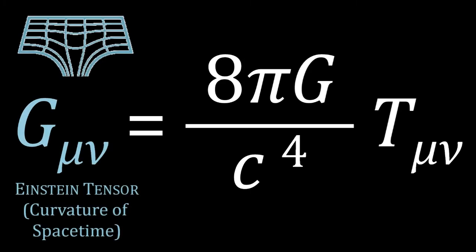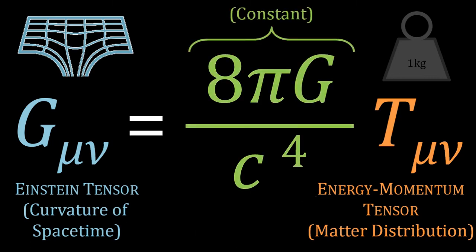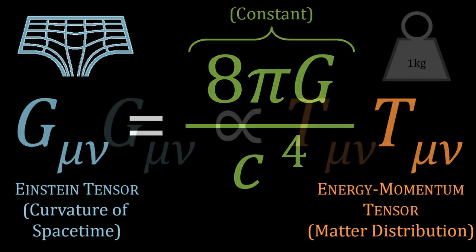The G mu nu represents the curvature of spacetime, and the T mu nu represents the distribution of matter in the universe. The bit in the middle is constant, so we can take it out and we are left with this beautiful relationship. Curvature is proportional to matter distribution.